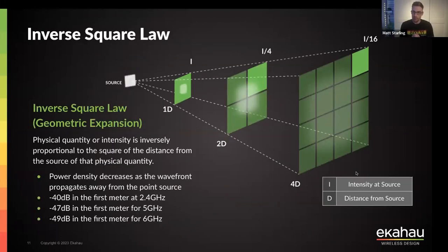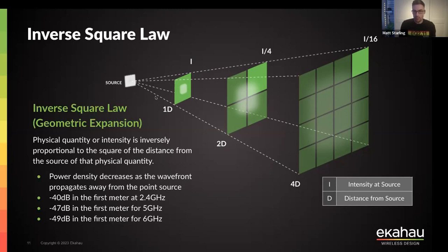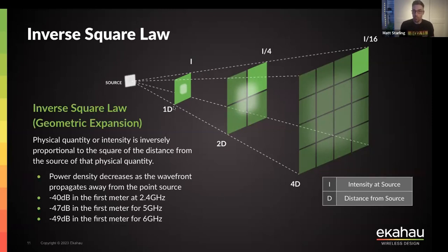Let me cover a few really important things to know, especially if you're designing wireless networks in Ekahau. The first is the inverse square law. Each time you move double the distance away from a point source of energy, you have one quarter of the power. In Wi-Fi terms, to get to one quarter of the power you go down by 6 dB — because halving power is minus 3 dB, so a quarter is minus 6 dB. That's the inverse square law at a very high level.